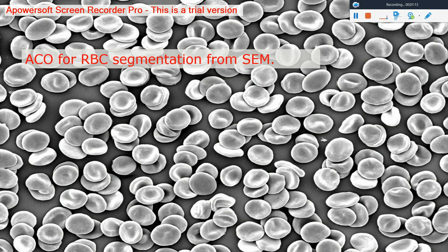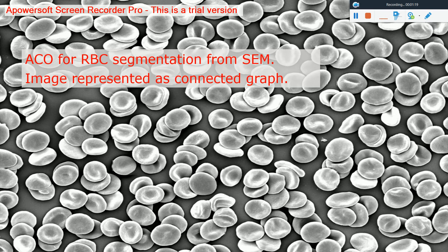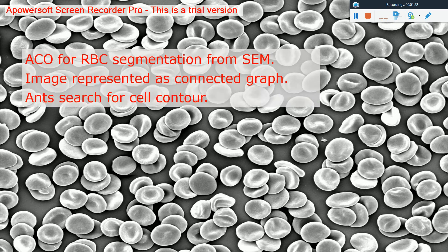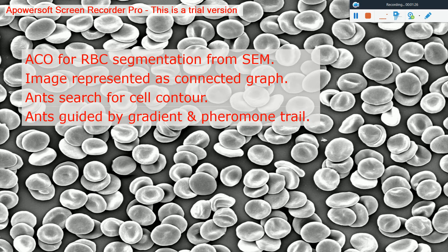I used ant colony optimization for red blood cell segmentation from scanning electron microscope images. The image is represented as a connected graph and ants search for the cell contour. These ants are guided by the gradient and the pheromone trail.